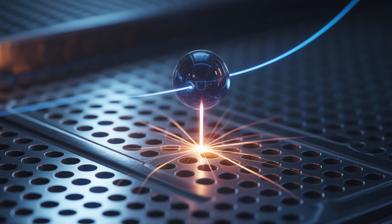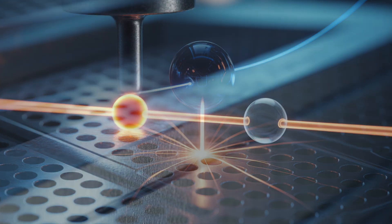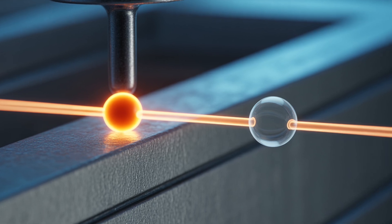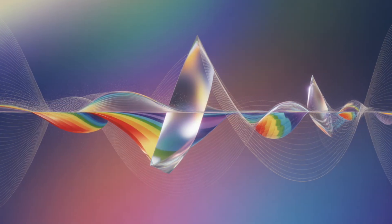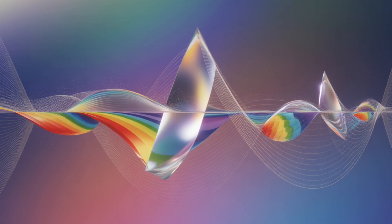When a photon strikes a metal surface, it transfers its energy to an electron. If the photon's energy exceeds the work function, the energy needed to liberate that electron from the metal, the electron is ejected. If not, nothing happens. It was a breathtaking insight, one that defied the wave theory entirely.